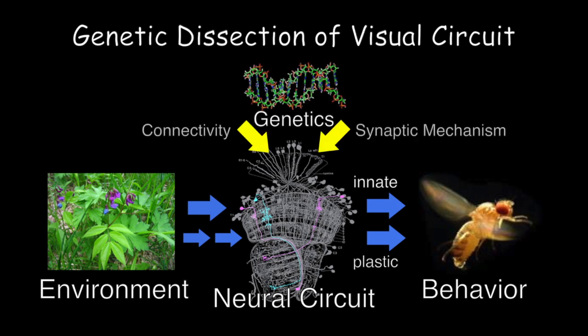By combining genetics with behavior and imaging approaches, we map the neural circuits and determine the synaptic mechanisms that process color information. I want to identify the visual neurons that process color information.